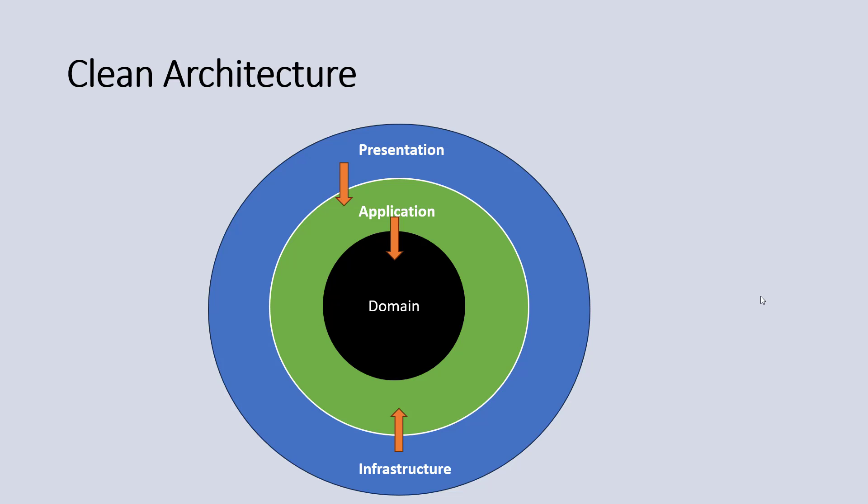Hello everyone, welcome to my channel ASP.NET Core. Today I am going to give you an example of clean architecture with a complete project. In clean architecture we have four layers: domain, application, infrastructure, and the presentation layer, which is the UI layer.